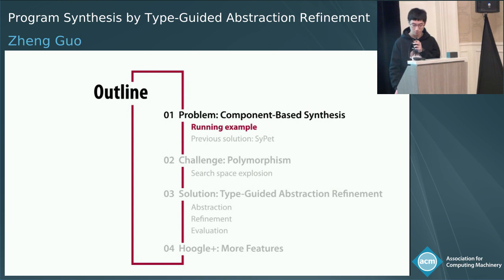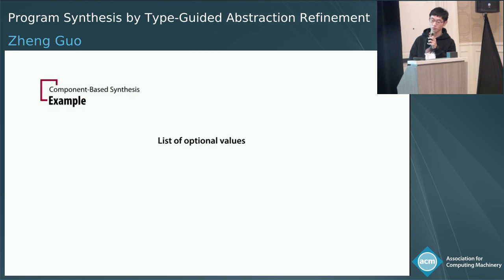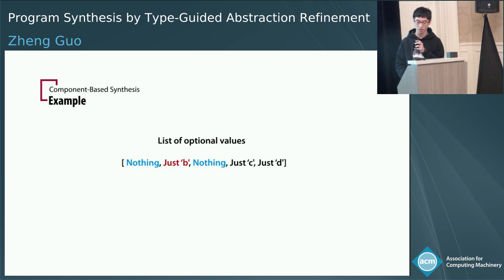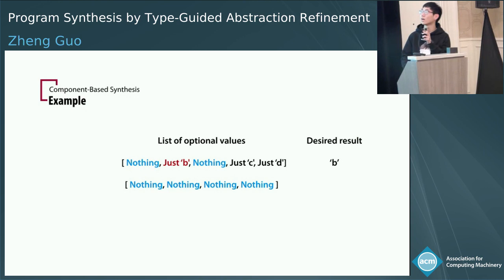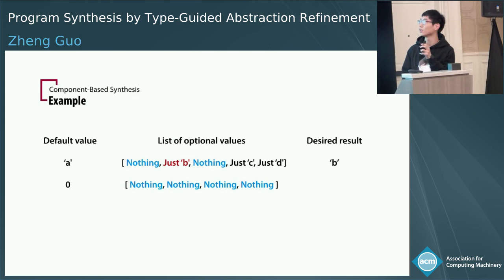Let's see an example first. Suppose you are provided with a list of optional values, which may or may not contain a value in it. For example, here is a list of optional values. You are required to produce the first non-empty value in this list. So for this example, the desired solution should be character B. It is also possible that you are given a list of all nothings, and then we also give you a default value. If you have a list of all nothings, you are required to produce the default value.